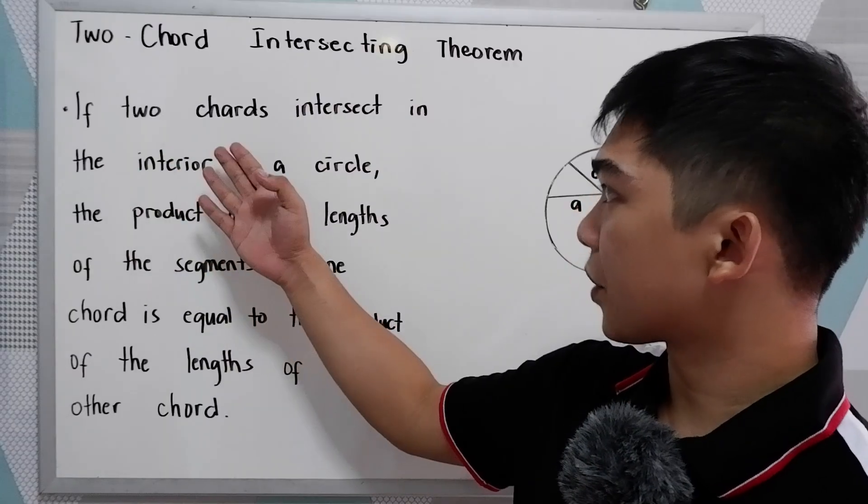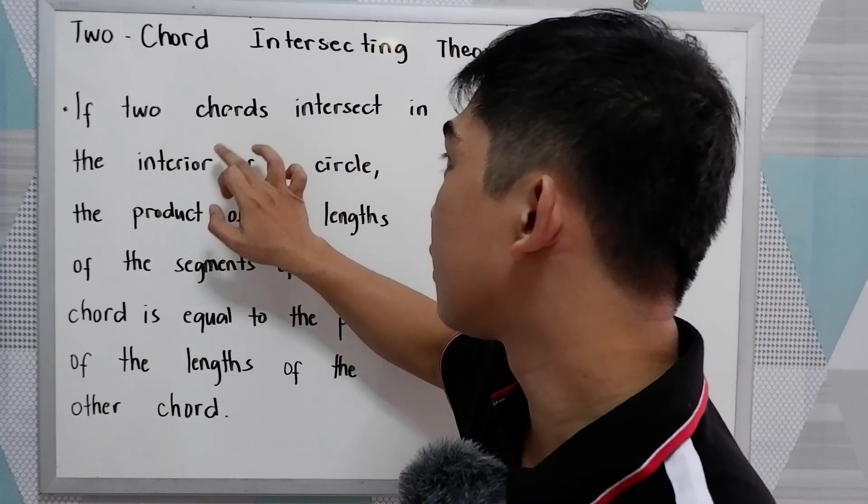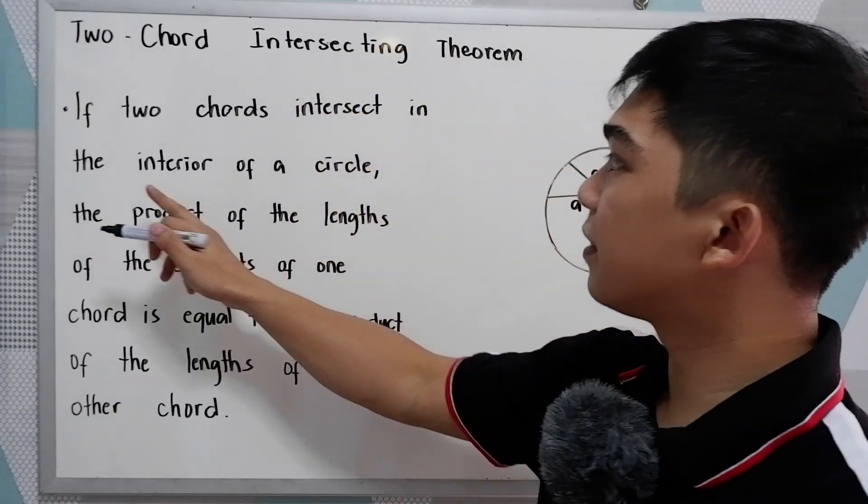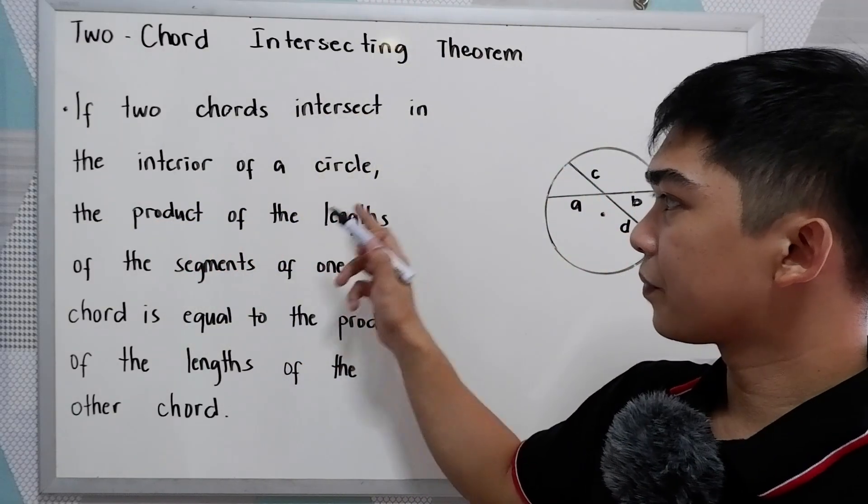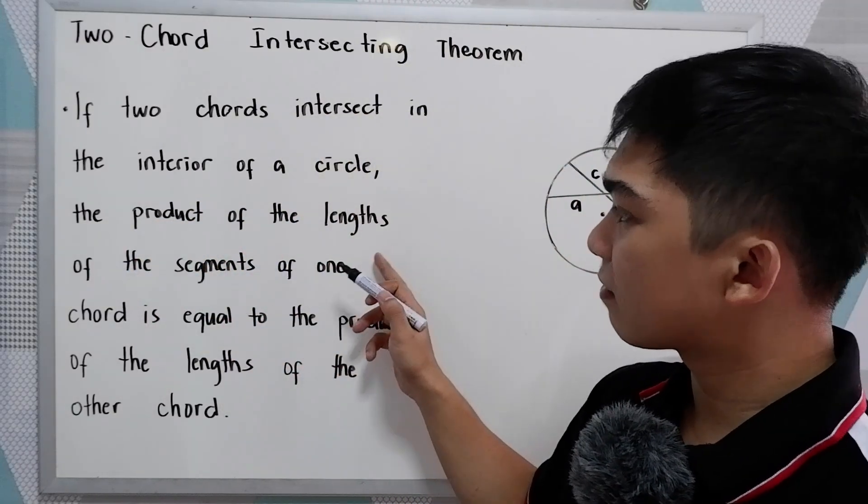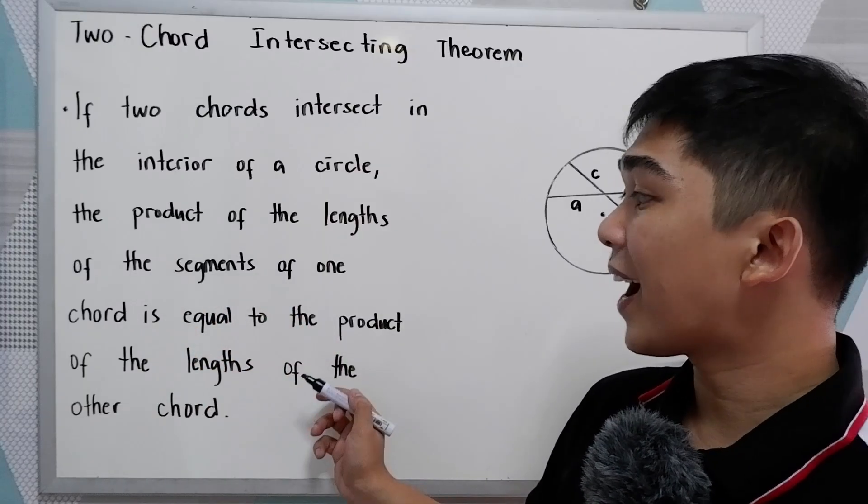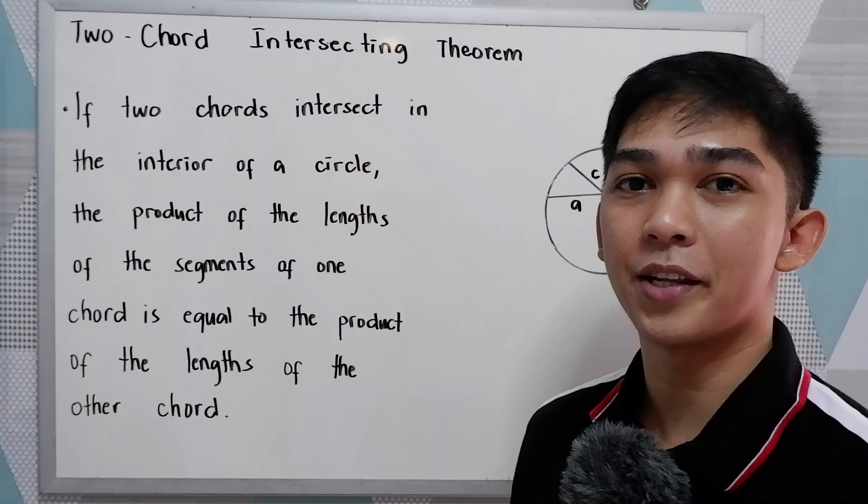If two chords intersect in the interior of a circle, the product of the length of the segments of one chord is equal to the product of the length of the other chord.